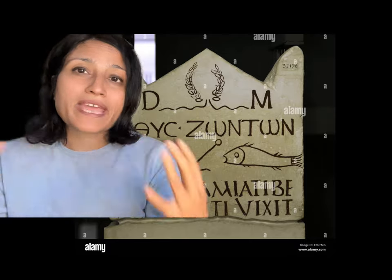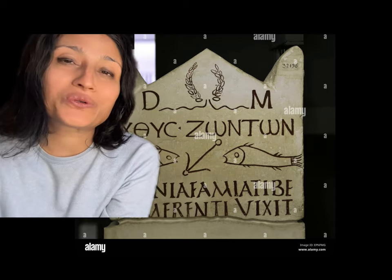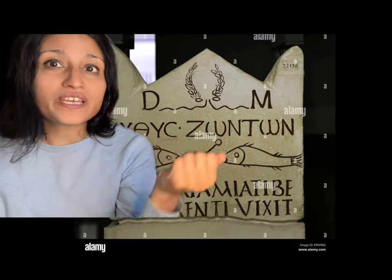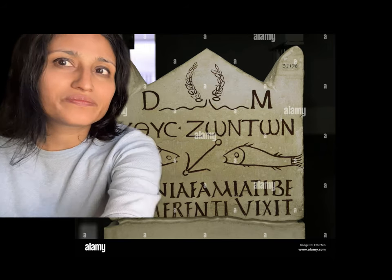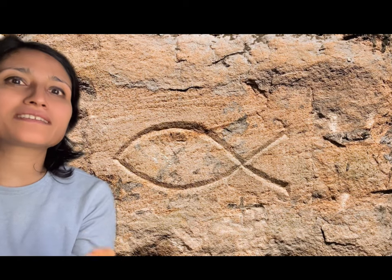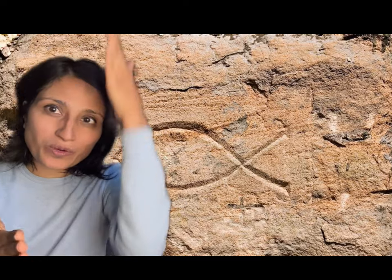One of those symbols that has remained and you still see commonly is the fish. In the early era, Christians needed to signal to each other that they were part of the same faith while being somewhat persecuted by Romans, so they used the fish symbol to mark places where Christians could worship. This relates to the miracle of the loaves and fishes, but it's also wordplay — 'ichthys' is an acrostic for 'Jesus, anointed of God, Son and Savior,' which spells out fish.